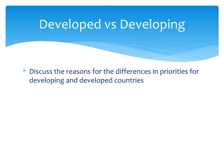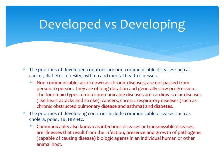Looking at some example questions, an exam may ask you to discuss the reasons for differences in priorities between developed and developing countries. When answering, we need to provide explanations and evidence for why priorities differ. For developed countries, priorities are non-communicable diseases such as cancer, diabetes, asthma, and mental health issues.